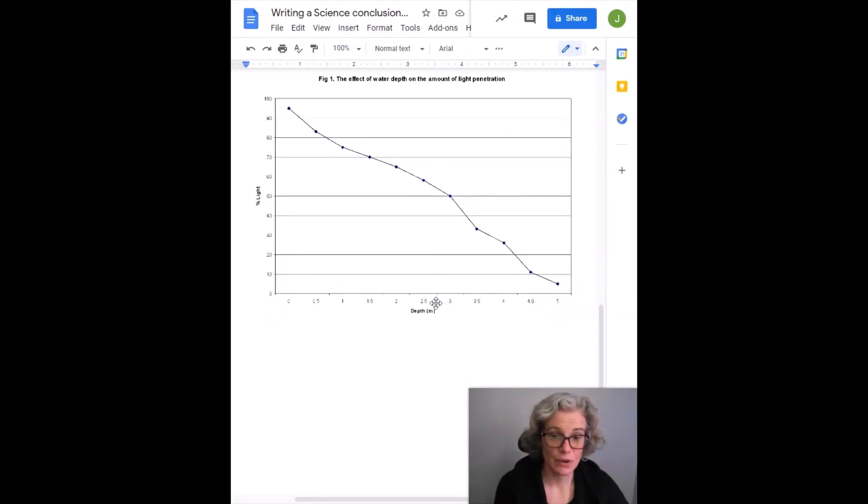Okay, so let's go ahead and begin the second paragraph. We could start our paragraph with something like, there were several possible sources of error.